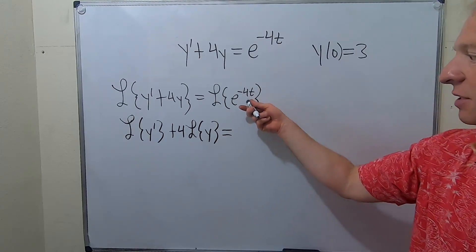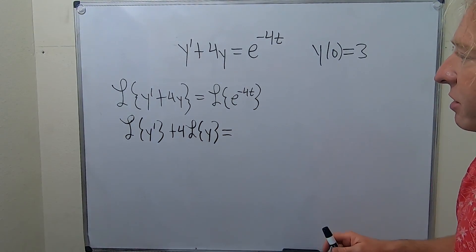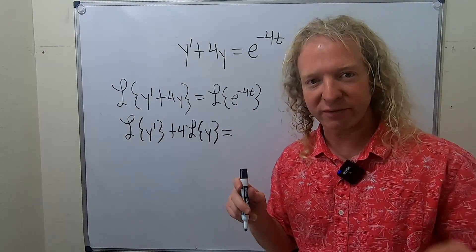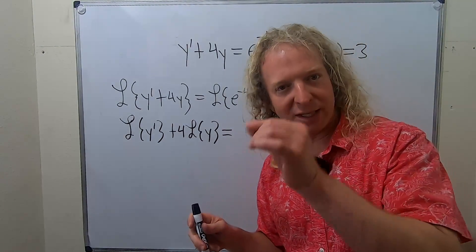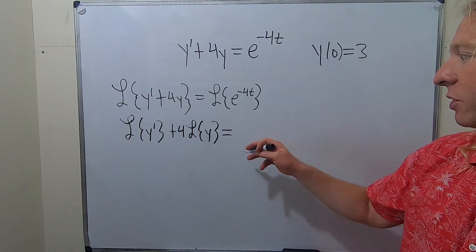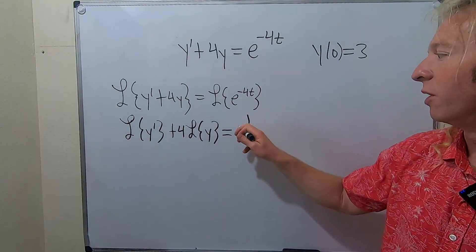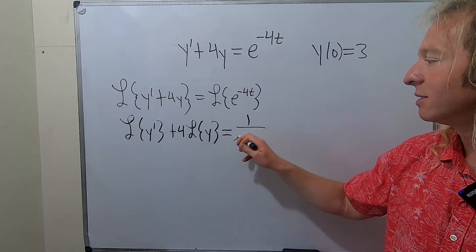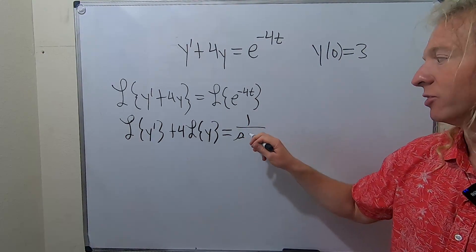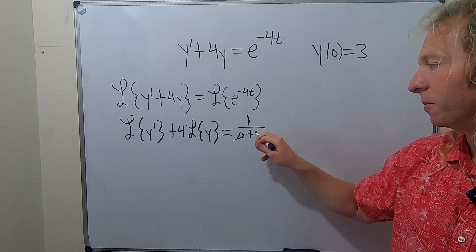Now we have to take the Laplace of the right-hand side. Remember, if you have the Laplace of e to the at, it's 1 over s minus a. So here, with e to the negative 4t, it's 1 over s minus negative 4, which is 1 over s plus 4.